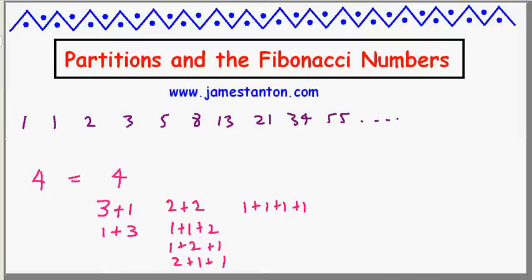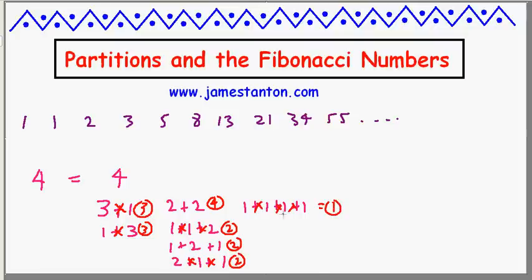Here's the surprising connection. Take each partition of the number 4, and replace each addition sign with a multiplication sign. So 3 times 1 is 3, and 1 times 3 is 3, 2 times 2 is 4, 1 times 1 times 2 is 2, 1 times 2 times 1 is 2, 1 times 1 times 1 is 1. And 4 itself is just 4 — there are no signs to change. Adding up all these products: 4 plus 3 plus 3 is 10, 14, 21. So the strange multiplication operation gave me the magic number 21.